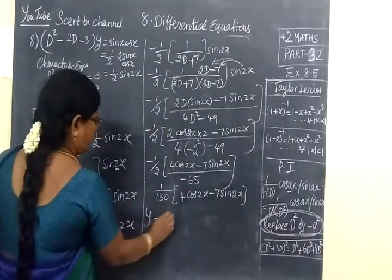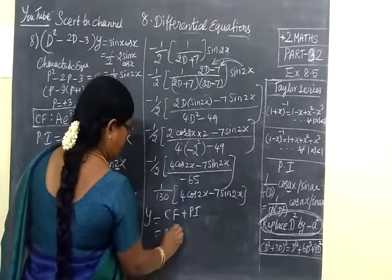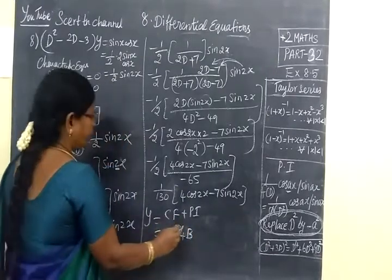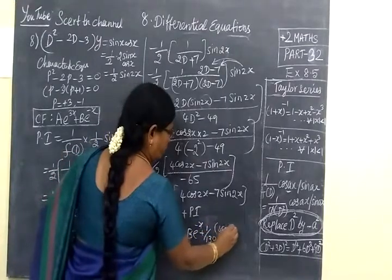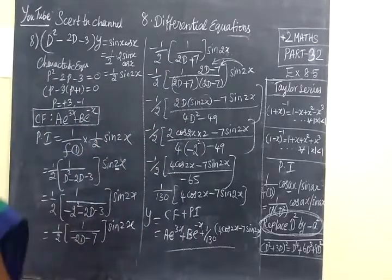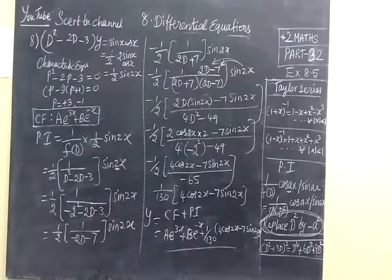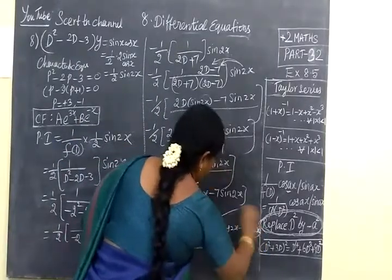Already there. Here Y equals CF plus PI equals A e power 3X plus B e power minus X plus 1 by 130, 4 cos 2X minus 7 sin 2X. So this is the answer. Y equals A e power 3X plus B e power minus X plus 1 by 130, 4 cos 2X minus 7 sin 2X. Clear.